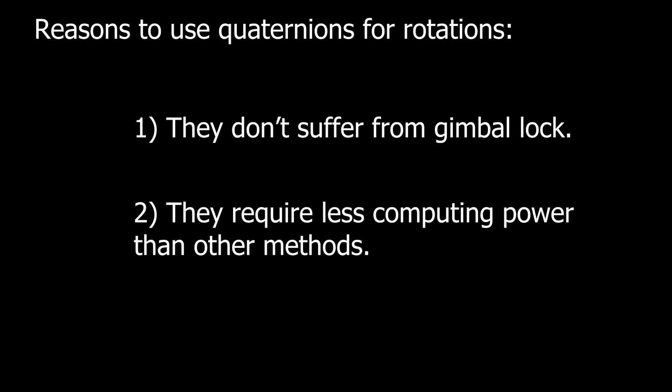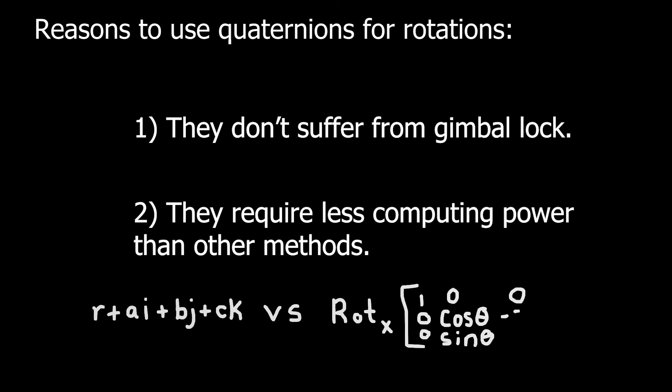So when modeling rotations with quaternions, however, you don't have this problem. There is no gimbal lock. You don't have to worry about that. In addition, a quaternion only requires your computer to handle four numbers. Whereas a three by three rotation matrix requires nine entries. So quaternions have another advantage of costing less compute power.